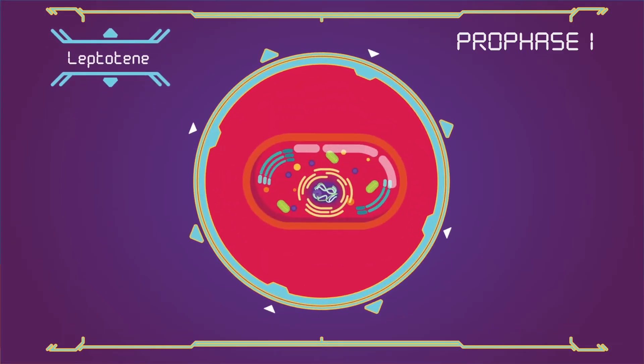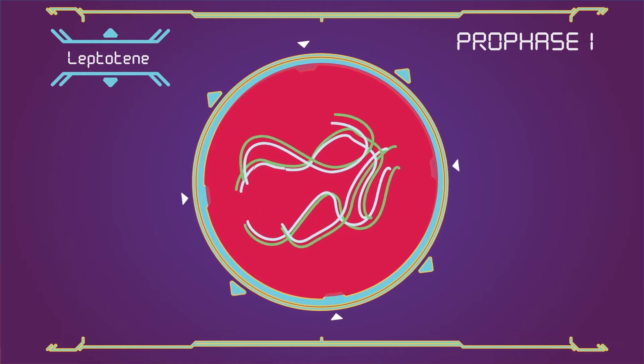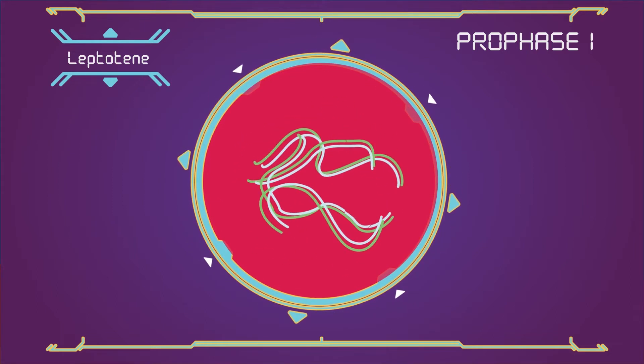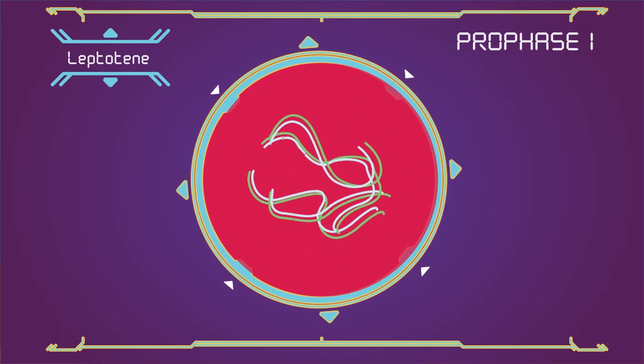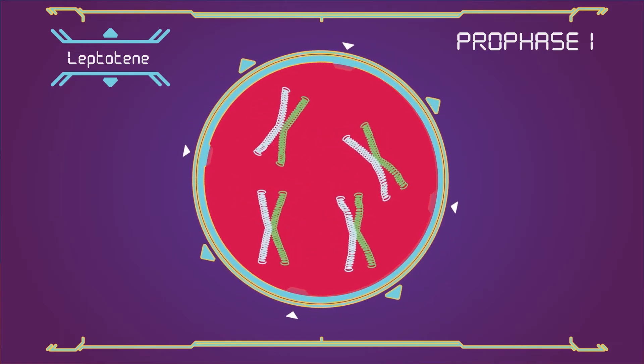Leptotene. In this stage of prophase 1, individual chromosomes, each consisting of two sister chromatids, become individualised to form visible strands within the nucleus. Leptotene is of very short duration and it's when the progressive condensation and coiling of chromosome fibres takes place.